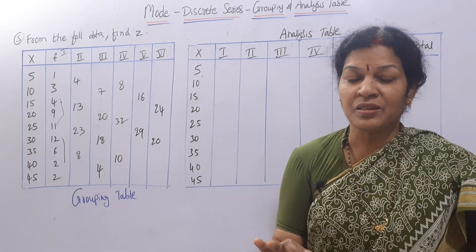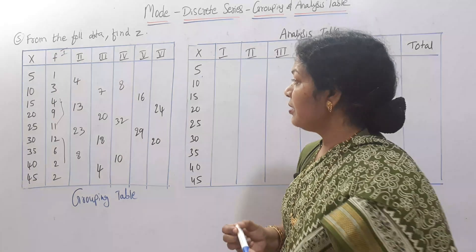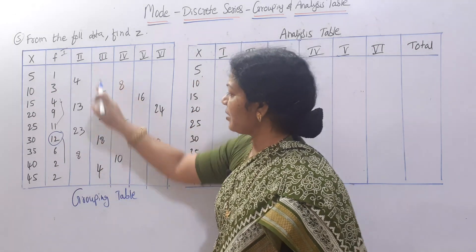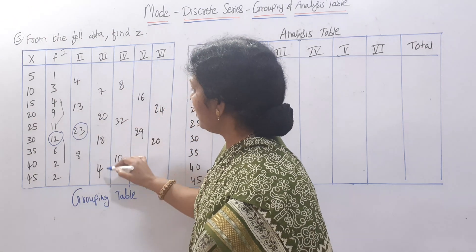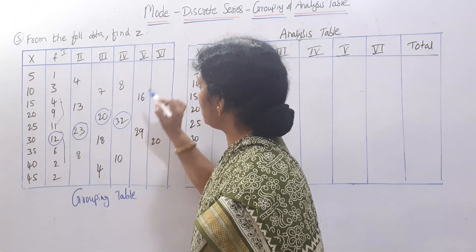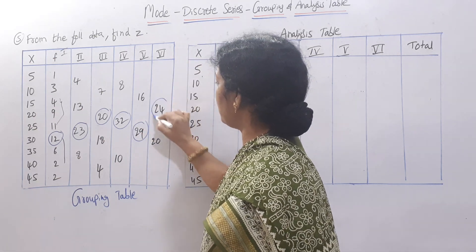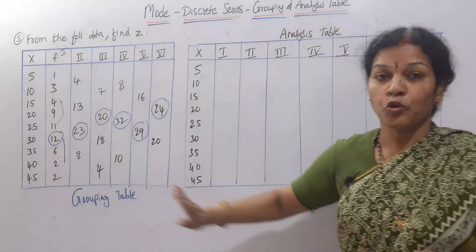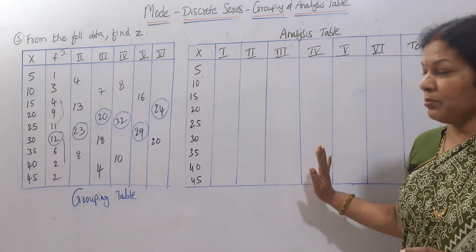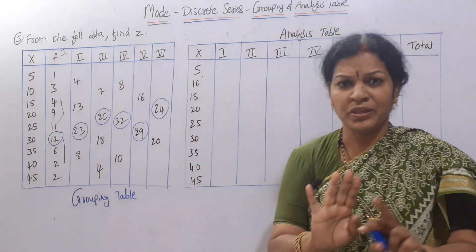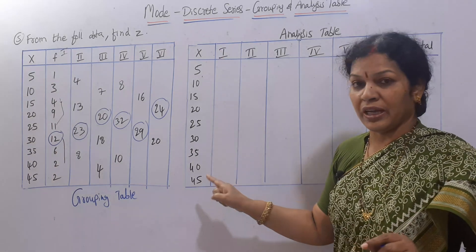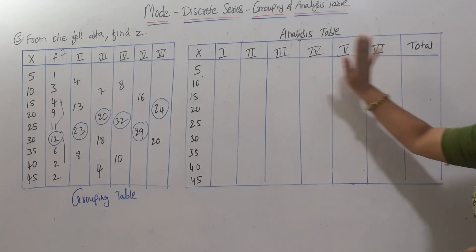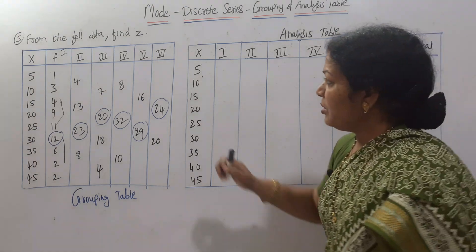Now we find the highest number in each column: column 1 — highest is 12; column 2 — highest is 23; column 3 — highest is 20; column 4 — highest is 32; column 5 — highest is 29; column 6 — highest is 24. The grouping table is over. Now coming to the analysis table — we take only X values, no frequency needed. All six columns are listed with a total column.